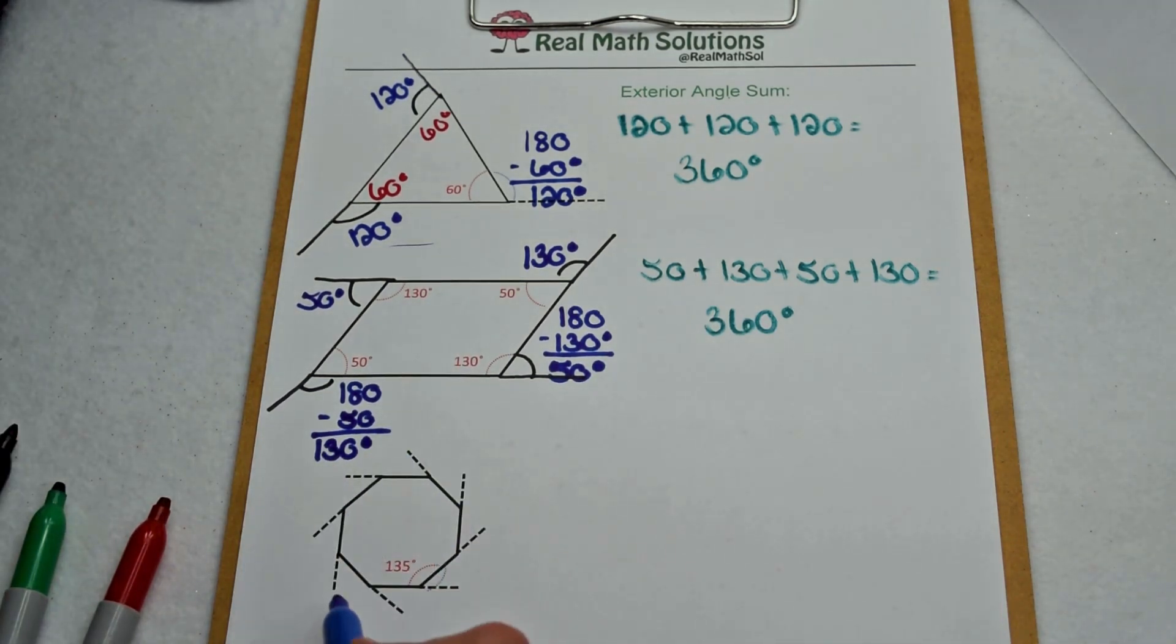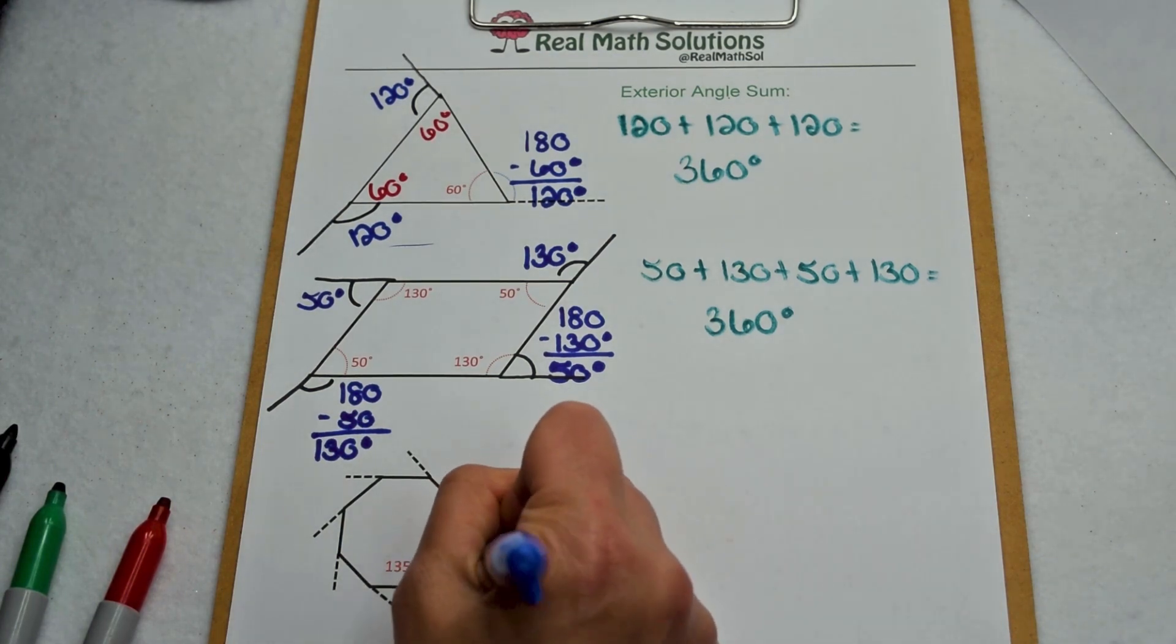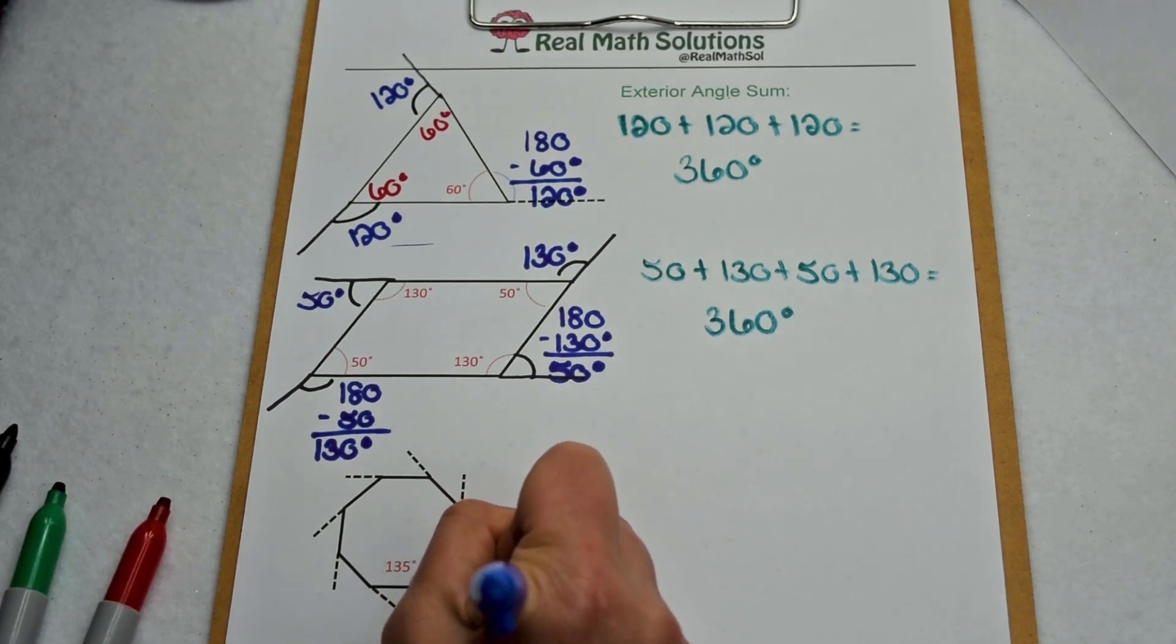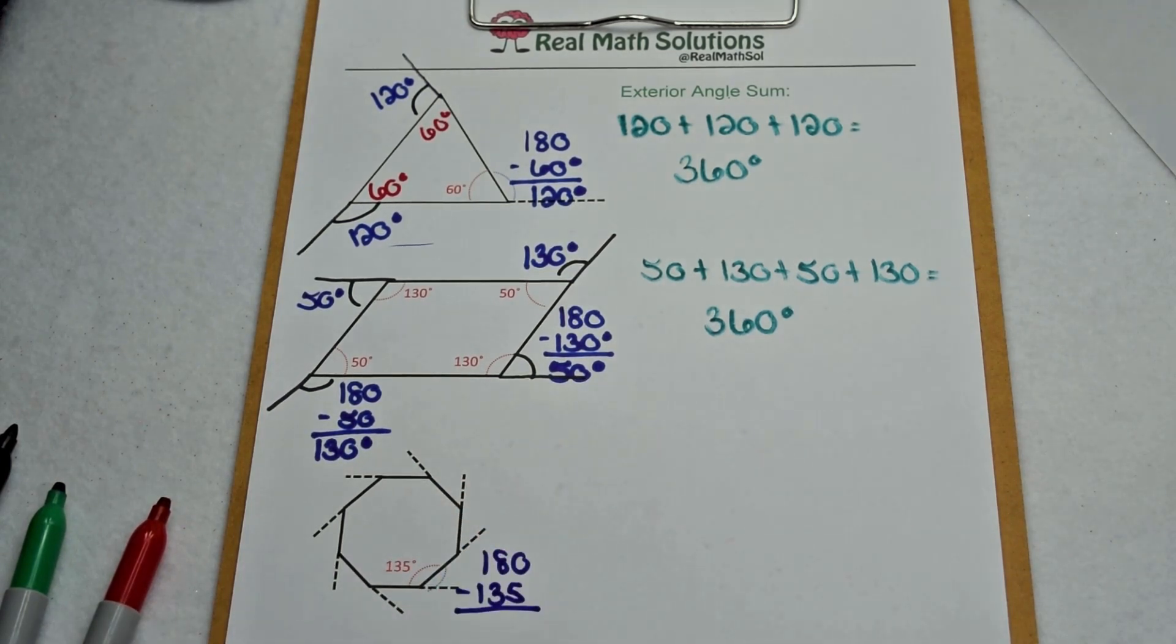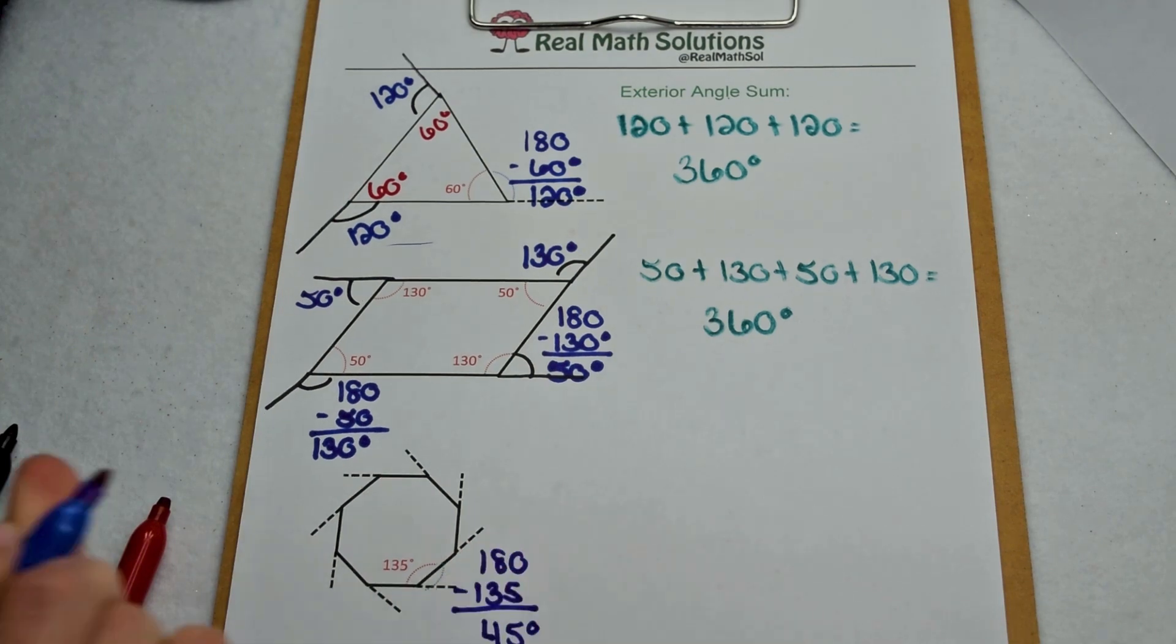Let's test this out here with a regular octagon. Since this is a regular octagon, we know all of its interior angles are going to be congruent, which means all of its exterior angles will be as well. Here we have one interior angle of 135 degrees. So to find the exterior angle, I'm going to subtract 180 minus 135, and that leaves me with 45 degrees.